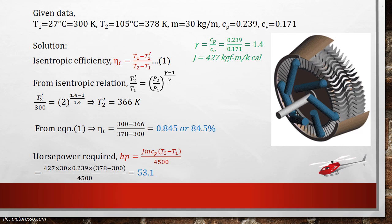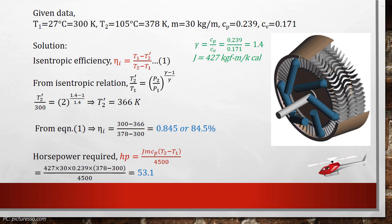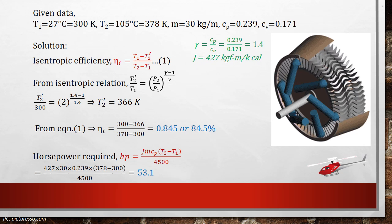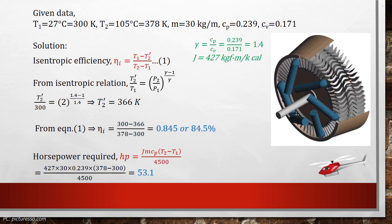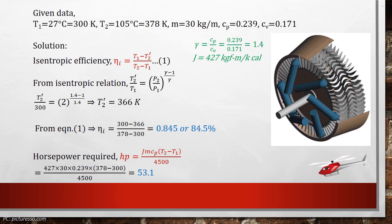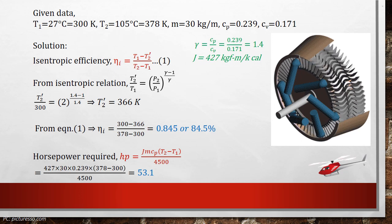Next, find the horsepower. So horsepower is the common unit of power, that is, the rate at which work is done. Horsepower depends on the actual rise in temperature. Then write HP is equal to J into m into C_P into T2 minus T1 divided by 4500, where J is the mechanical equivalent of heat which is 427 kilogram force meter per kilocalorie.